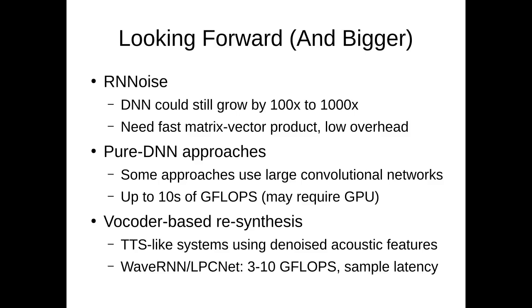And if we want that to run in real time, the most promising approaches are through WaveRNN or even LPCnet. Those involve around 3 to 10 gigaflops, so less than some of the pure DNN approaches.